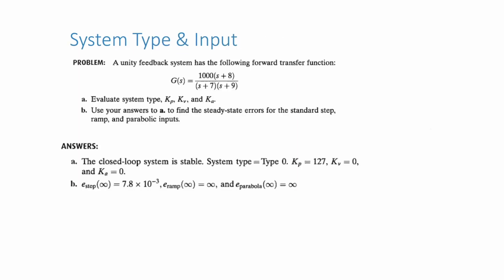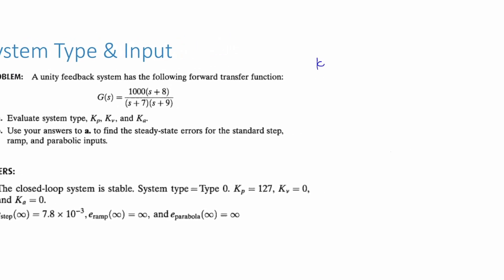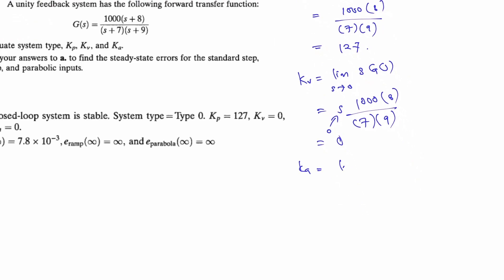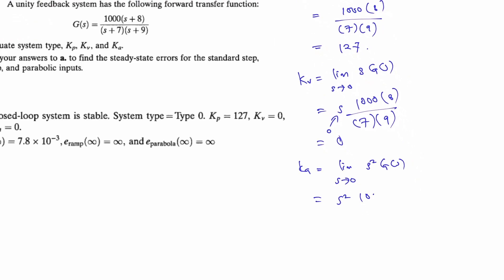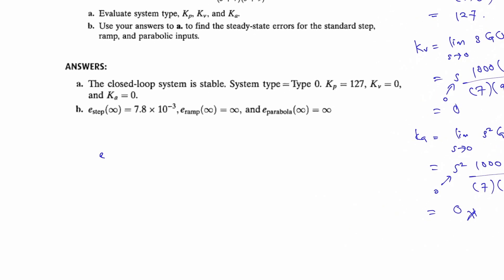Let's take a look at an example. A system with no integrations means the system is type zero. For a step input, Kp is 127 while Kv and Ka are zero. From the values of static error constant, we can find the steady state error by replacing the term with 1 over 1 plus Kp for a step input, 1 over Kv for ramp input, and 1 over Ka for a parabolic input.